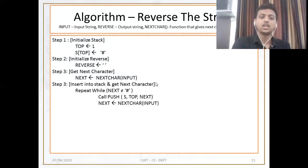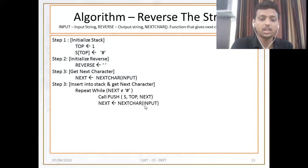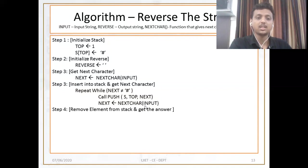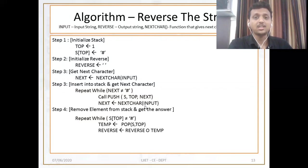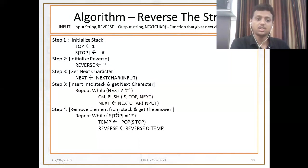Repeat while next is not equal to hash: first call push s comma top comma next, then again call the next character function. These steps continue in a loop. Then to remove elements from the stack and get the answer: repeat while s of top is not equal to hash — do pop operation, store inside temp variable, then concatenate temp with reverse. Last: write the reverse and return.